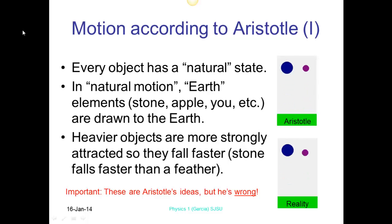In a natural state, earth elements like stones, apples, things that you can see, are drawn to the earth. So he was talking about gravity as the force there. Heavier objects are more strongly attracted, so they fall faster. Now we know that's actually wrong. In reality, it doesn't matter if it's a brick or a feather. If you neglect air resistance, they will fall at the same rate. So that's the other force that will change that scenario.